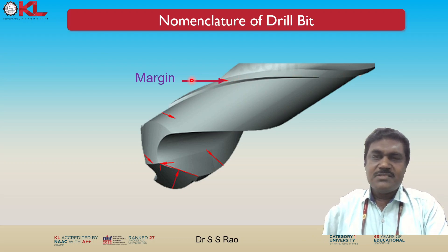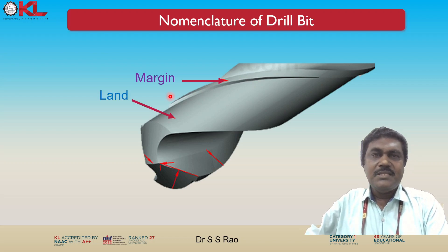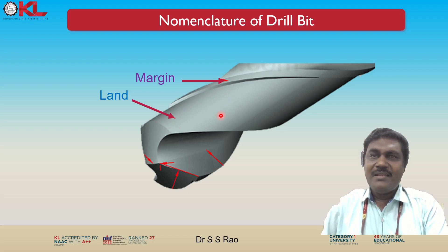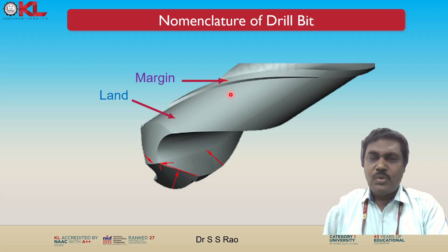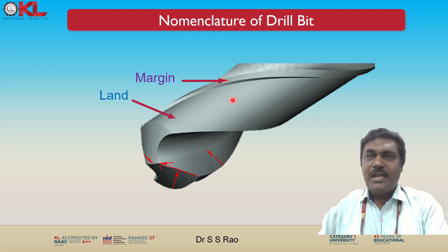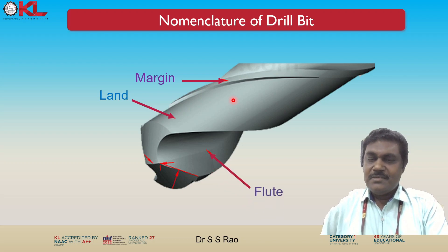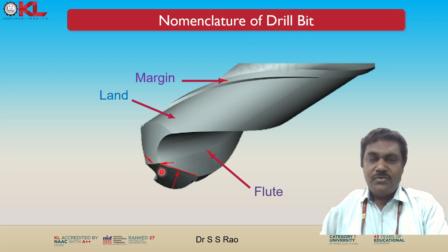Now the land portion. The land is the small flat area on the top of the flute between the cutting edges. It helps to center the drill bit in the hole and provides support for the cutting edges.